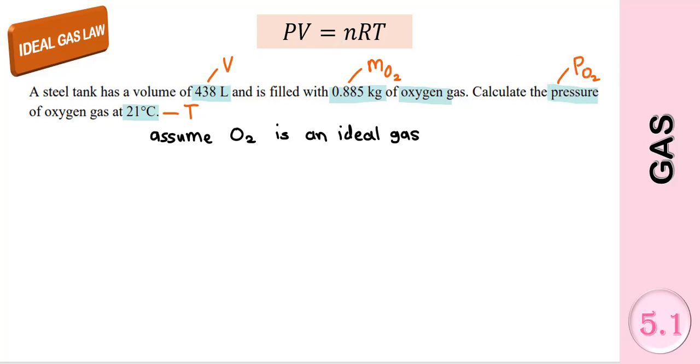We already have the volume. We have the gas, and pressure is what we want to find. We know that R is constant, so we have the value of R. The temperature is also given. So what we need to find is the number of moles.